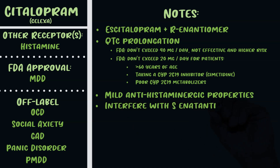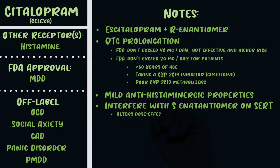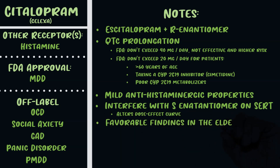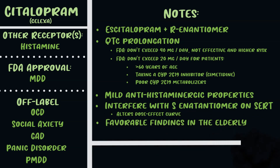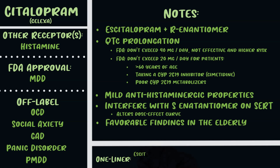The FDA also says don't exceed 20 mg/day for patients over 60, those taking CYP2C19 inhibitors such as cimetidine, or poor CYP2C19 metabolizers. The R-enantiomer also causes mild antihistaminergic properties and can interfere with the S-enantiomer, altering the dose-effect curve — creating a leveling off of efficacy reflected in the FDA's dosing limitations. Celexa does have favorable findings in the elderly. In one line: it's basically escitalopram plus a problematic R-enantiomer with a little antihistamine and more QTc problems.